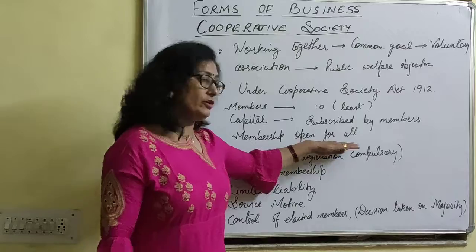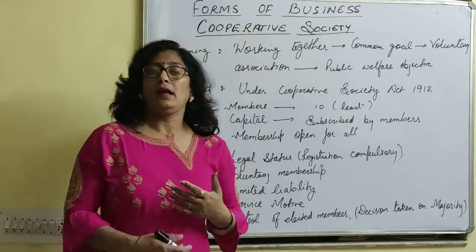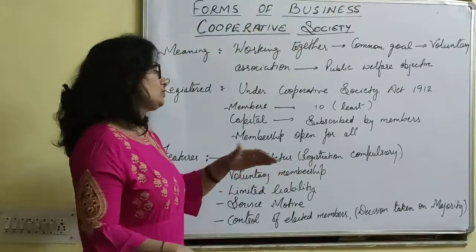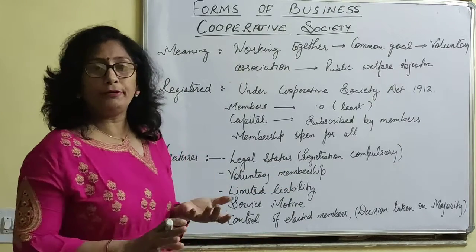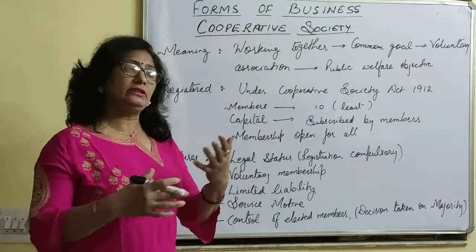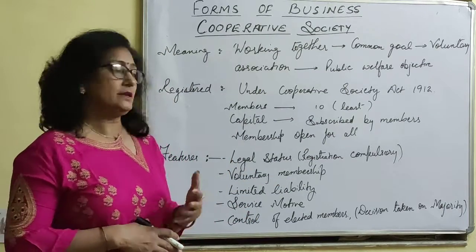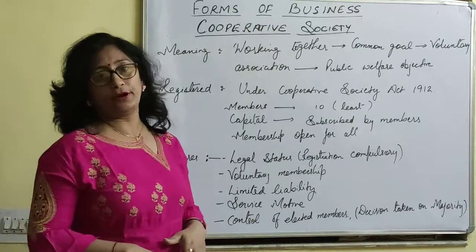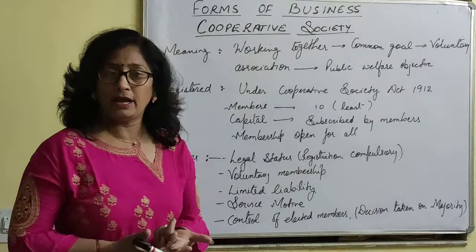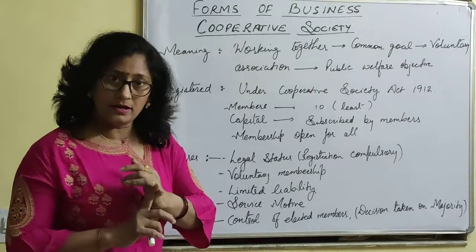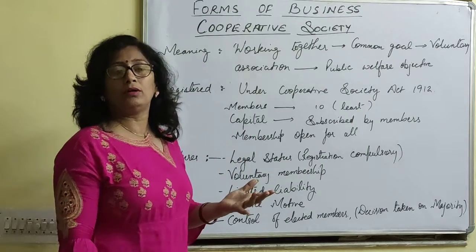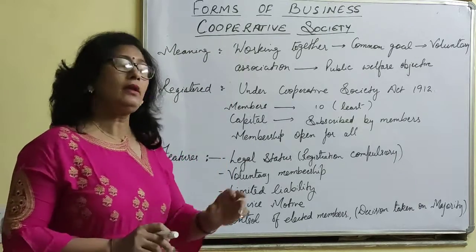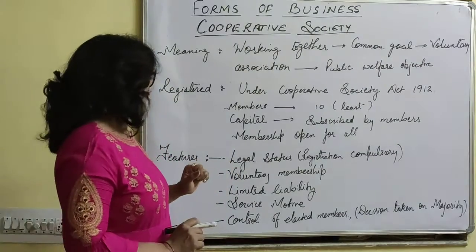The next feature is voluntary membership. In cooperative society, anyone could be a member — it is open for everybody who is interested. They can subscribe money and, with the permission of all members and certain formalities, join the society. However, the person must be an adult and not be mentally unsound.